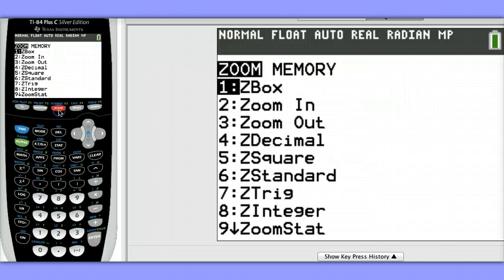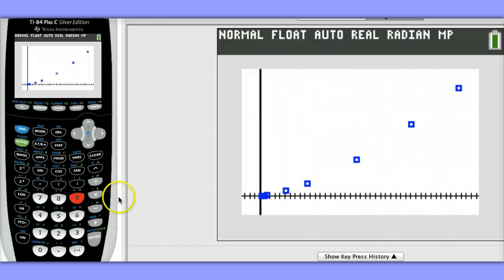Let's hit Zoom, Stat, Option 9. We can see that this has a slight curve to it, so a linear model would not be a good fit. Next, we're going to see if either an exponential model or a power model might be better. To do this, let's first begin by transforming both List 1 and List 2 by taking the natural log of each list.